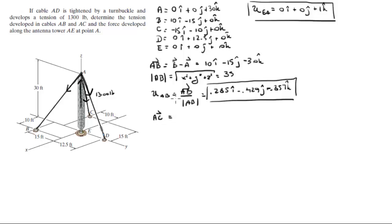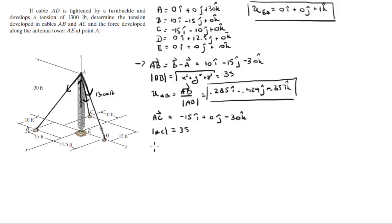Next is unit vector AC. I'll move quicker since the process is repetitive. Vector AC equals -15i + 0j - 30k. The magnitude of AC is also 35. Unit vector AC equals -0.429i - 0.285j - 0.857k.